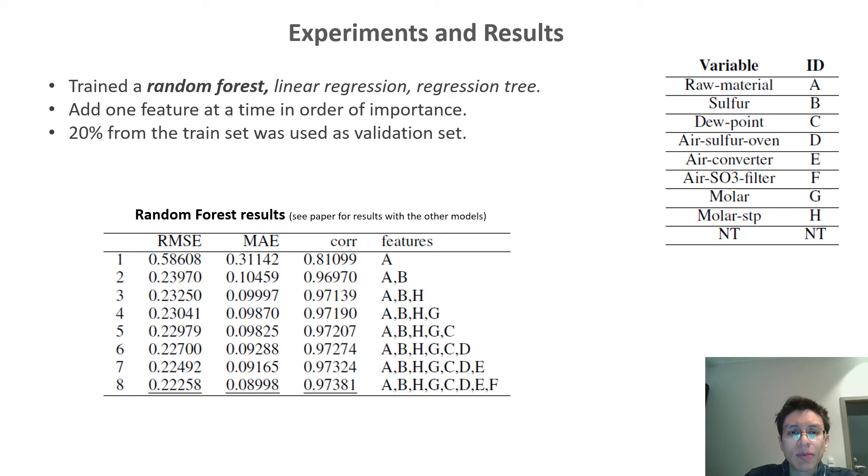If you remember from the previous slide, we found that the most important variables were A, B, H, and so on. So what we did here was to train a random forest model using only the most important variable, in this case variable A. This resulted in a root mean squared error of 0.5, a mean absolute error of 0.3, and a correlation of 0.81.